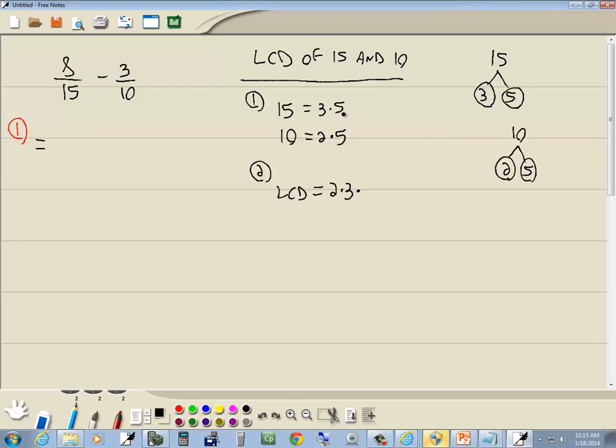Then I go to the 5. I'm looking for the greatest number of 5s on any single line. There's 1 here, there's 1 here. So the greatest number of 5s on any single line is 1. Keep in mind, we're not counting how many there are total. We're looking for the greatest number of them on any single line. 2 times 3 is 6, times 5 is 30.